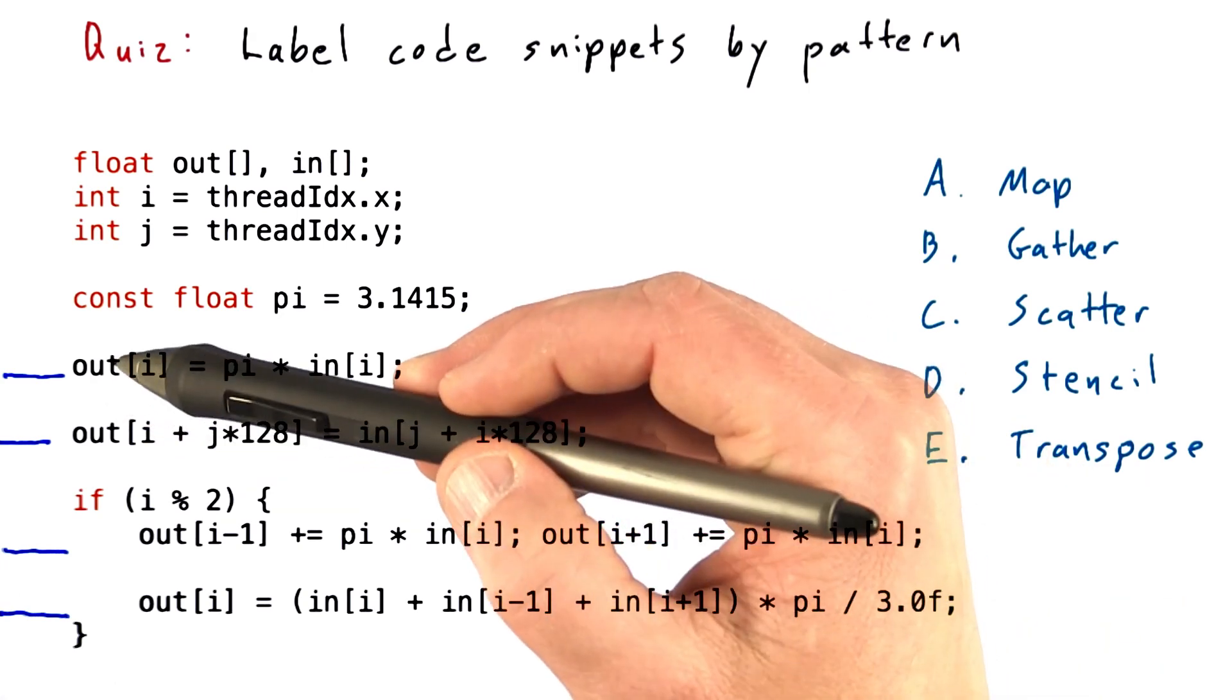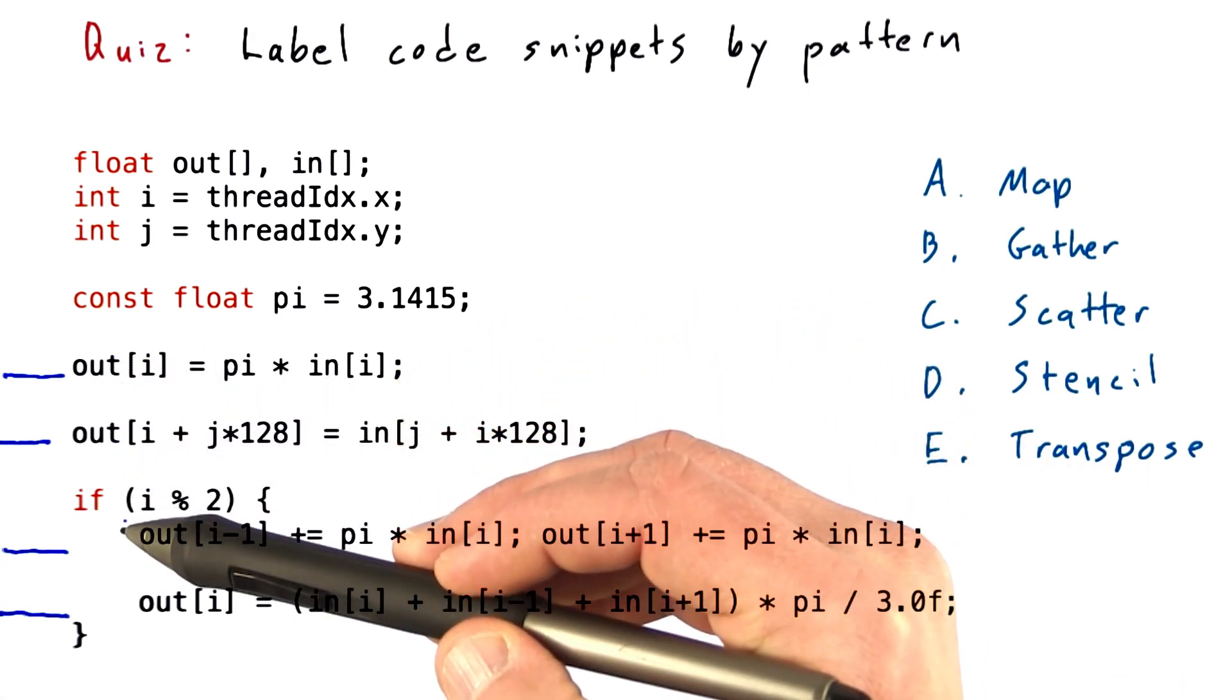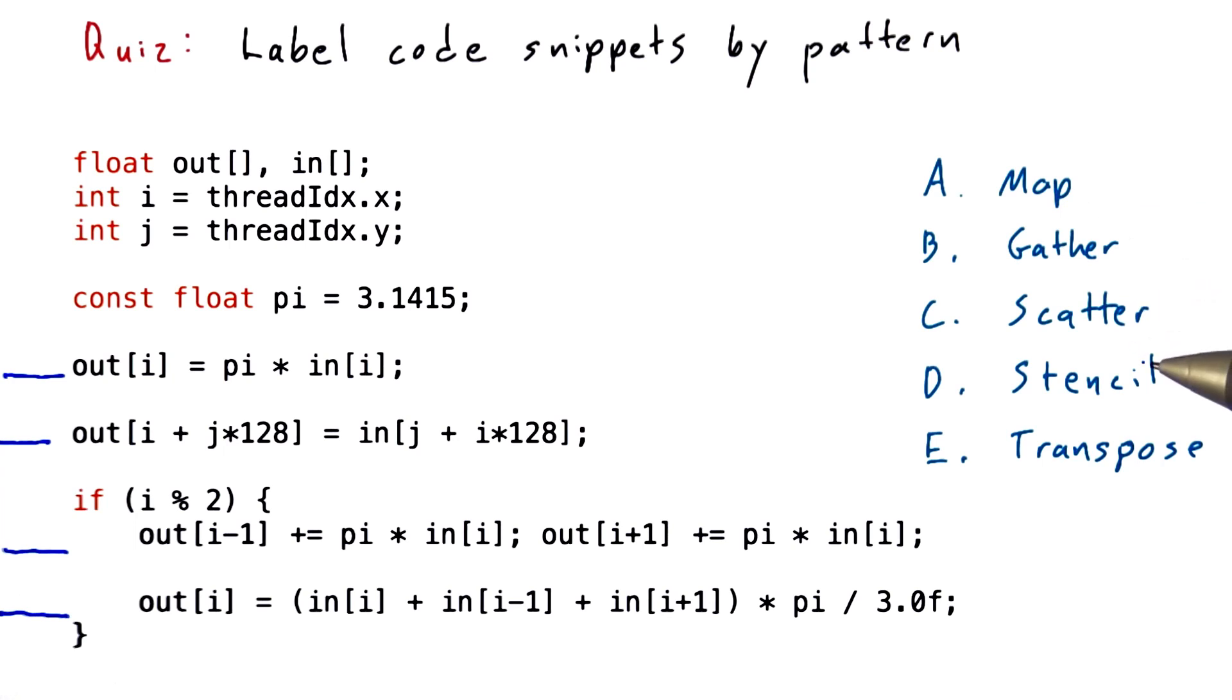So for each of these statements, each of these little code snippets, indicate whether it's a map, a gather, a scatter, a stencil, or a transpose.